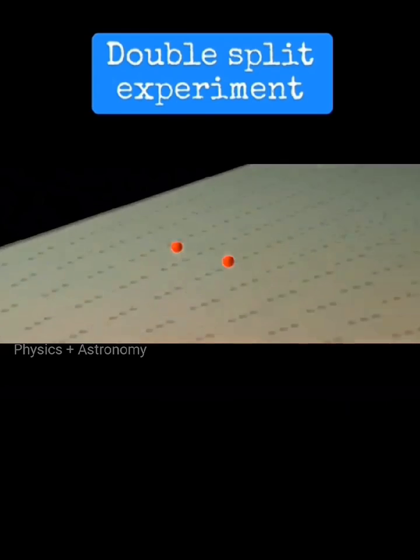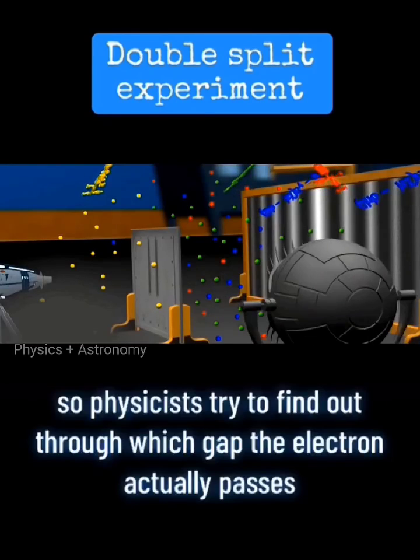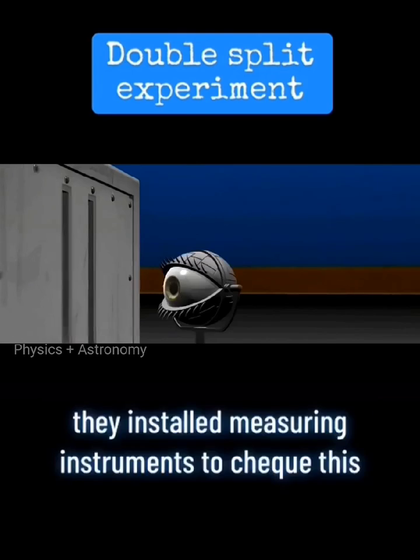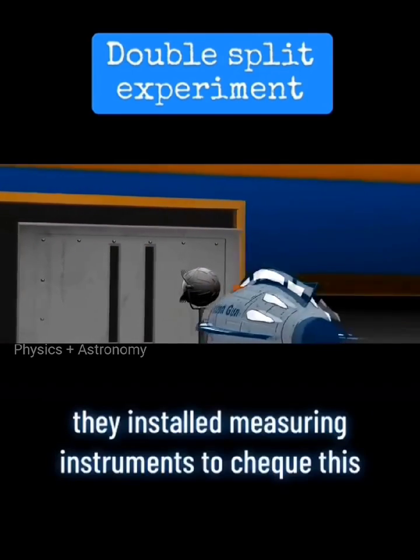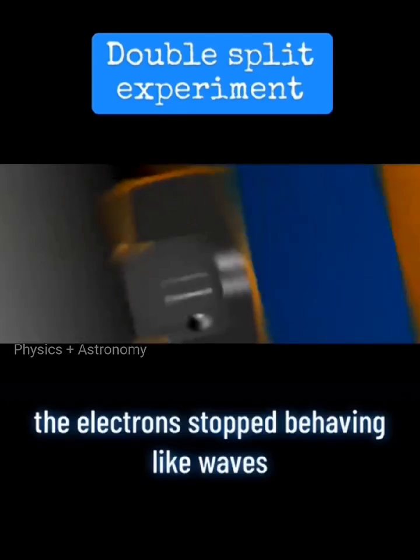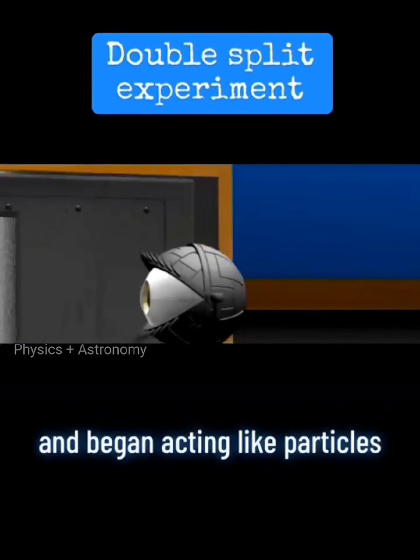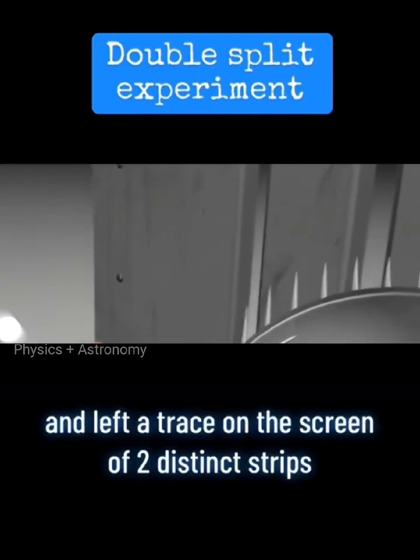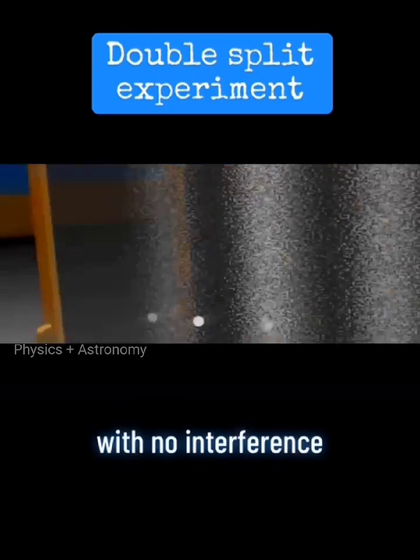Impossible. So, physicists tried to find out through which gap the electron actually passes. They installed measuring instruments to check this. Another seeming impossibility occurred. The electron stopped behaving like waves and began acting like particles and left a trace on the screen of two distinct strips with no interference.